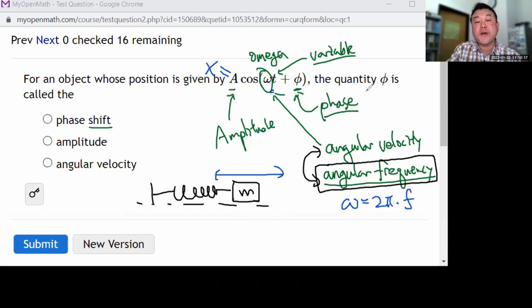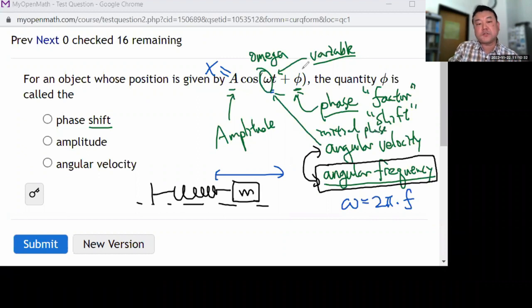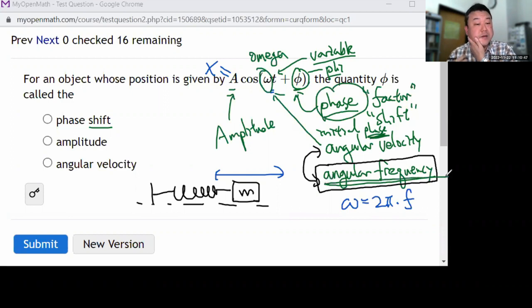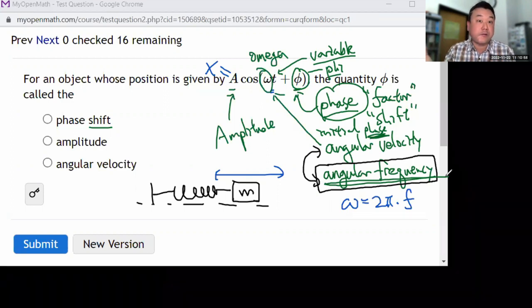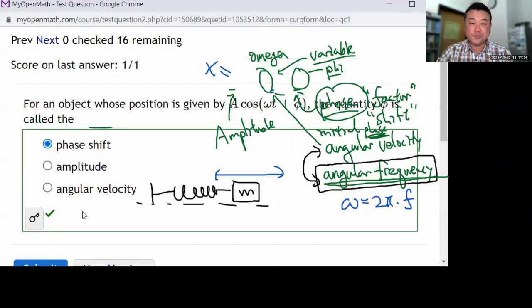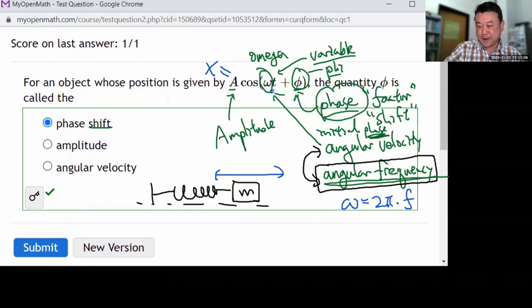In any case, the quantity phi is called a phase or phase factor. It's called phase, or in this case, phase shift, which is fine. The important word here is the word phase. Sometimes you will hear phase factor, or phase shift, or maybe even initial phase. The important word here is the word phase. All right, let me look at next two questions.